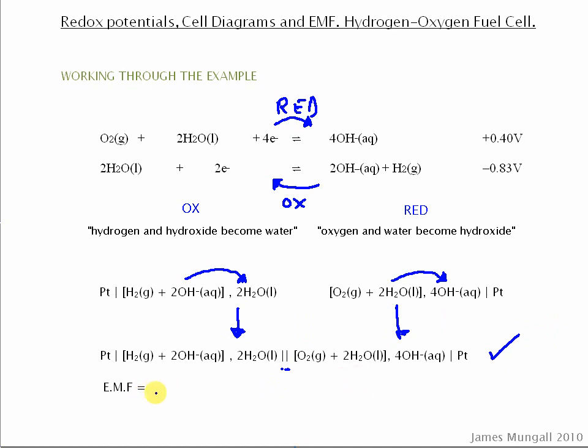Okay, we need to work out the EMF. So the EMF, we're going to take the more positive electrode and then reverse the sign of the other electrode. So that comes out as positive 1.23 volts.